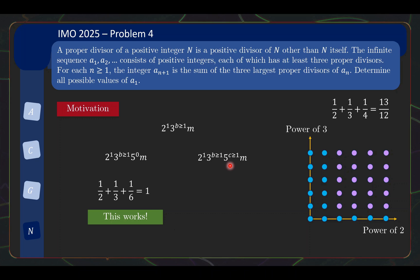On the other hand, if 5 is a factor, then the 3 largest proper divisors are n/2, n/3, and n/5, which sum to give 31/30 · n. When you multiply by 31/30, you lose your factor of 2 and end up in the odd case. And as the spoiler promised, odd numbers will not work.